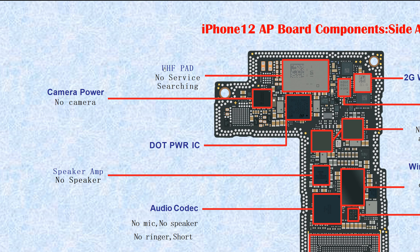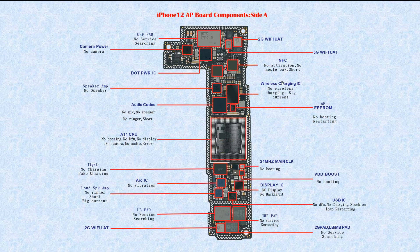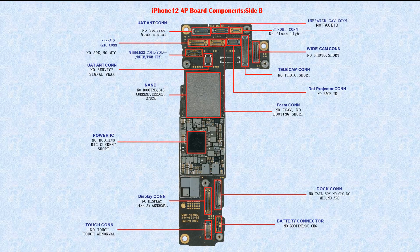This one is the UHFPAD — Ultra High Frequency Power Amplifier. If broken, it causes no service or searching. That's all for AP board Side A. Now let's look at Side B.